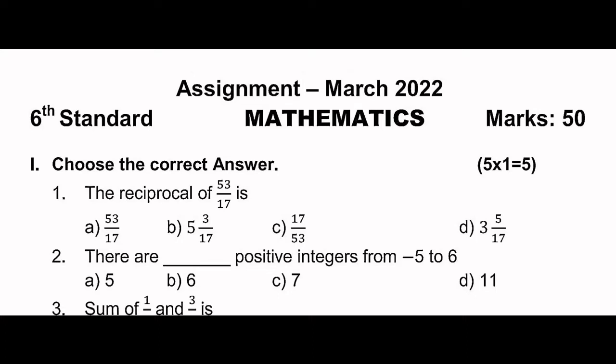Question 1: Reciprocal of 53 by 17 is what? The concept of reciprocal means you invert the given number - numerator becomes denominator and denominator becomes numerator. So if 53 by 17 is given, its reciprocal is 17 by 53. That is our answer.